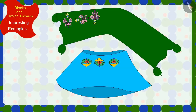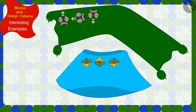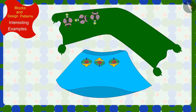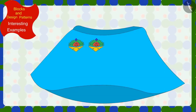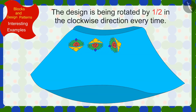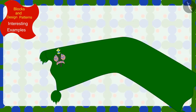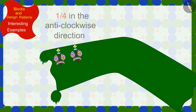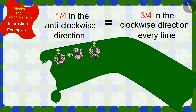Children, can you now help Uncle find the rules of patterns made on this skirt and the dupatta? Find the solution for this with your friends. In the pattern on the skirt, the design is being rotated by half in the clockwise direction every time. And in the pattern made on the dupatta, the design is being rotated by a quarter in the anticlockwise direction — or three-fourths in the clockwise direction — every time.